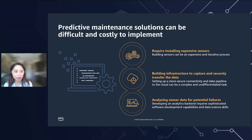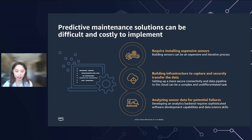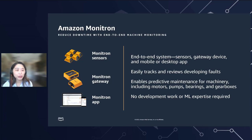What are the common challenges making predictive maintenance solutions difficult for industrial use cases? First, it usually requires expensive sensing instrumentation. Second, building and updating machine learning pipelines to provide accurate inference output is also difficult. Last but not least, analyzing sensor data from potential failures and setting up a correct mechanism to warn your OT team is also not easy. Our solution to these challenges from AWS is called Amazon Monitron — an end-to-end solution that includes wireless sensors, a gateway device, and a mobile app so that technicians can easily track and review developing faults. And the best part — you don't need any machine learning experience to start using Amazon Monitron.